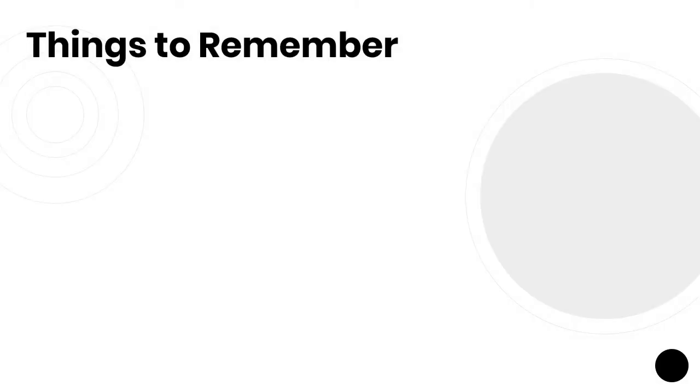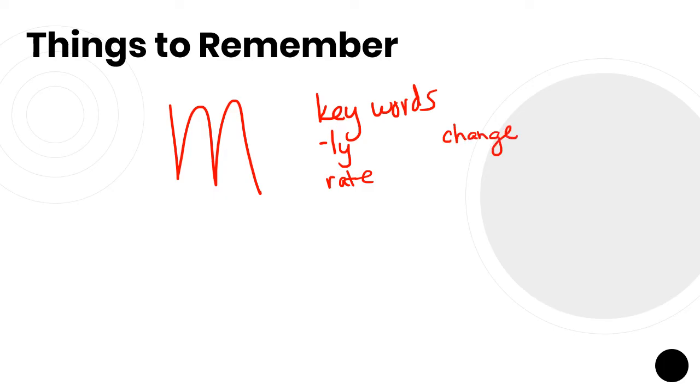All right, you guys. Pretty quick, right? Not too bad. So key things to remember for your slope. Look for keywords. Words that end in L-Y, words that say rate, words that deal with change, and then of course, is it positive or negative? Are we talking increase, decrease, descending? Look for any implications of positive or negative. That's going to be very important moving forward.